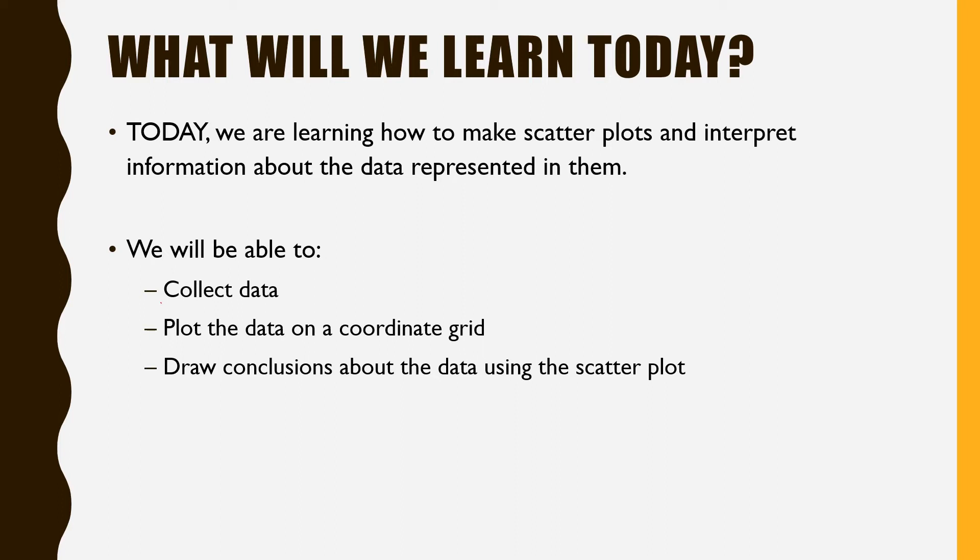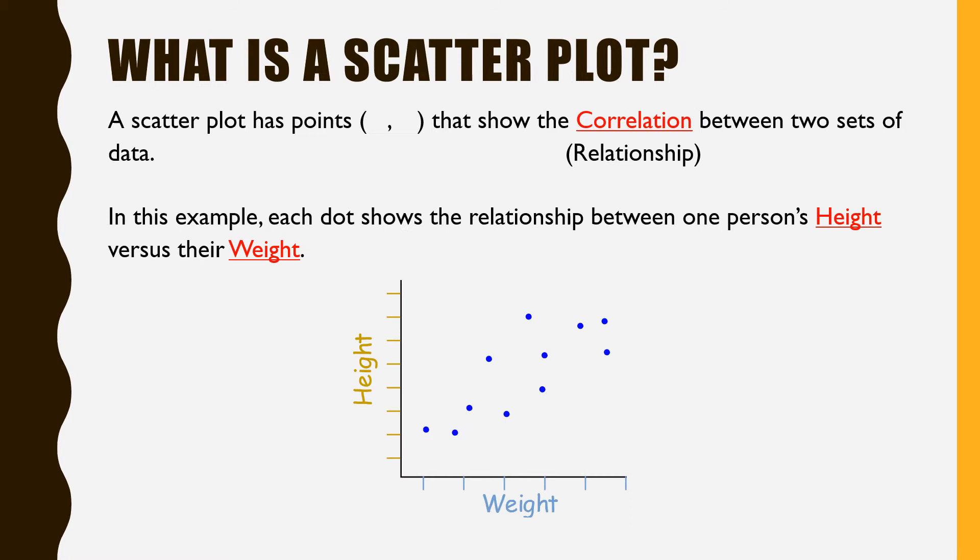Today we are learning how to make scatterplots and interpret information about the data represented in them. We will be able to collect data, plot the data on a coordinate grid, and draw conclusions about the data using the scatterplot. We'll be able to use words like correlation, positive, negative slope, things like that. Let's go ahead and get started.